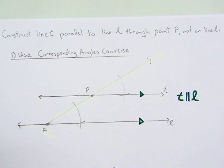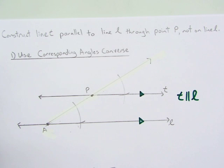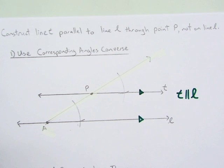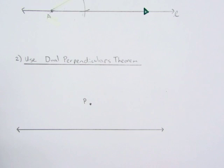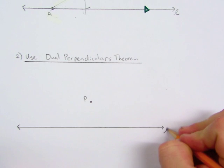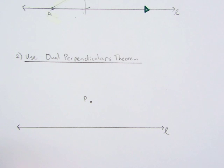Next, I'm going to show you how to use the dual perpendiculars theorem to also make a parallel line. So here I have line L and point P on the line.